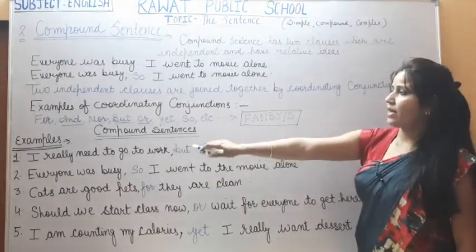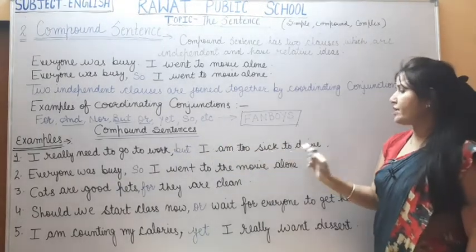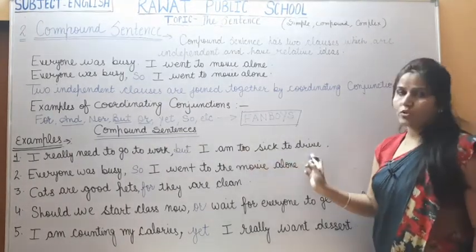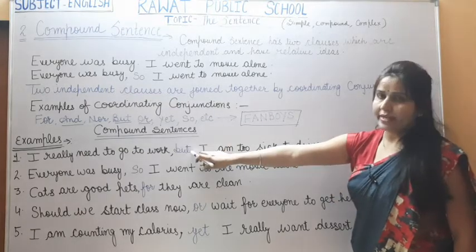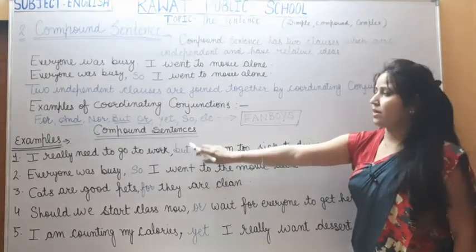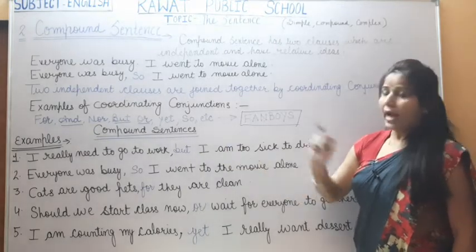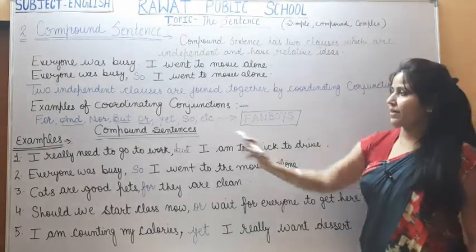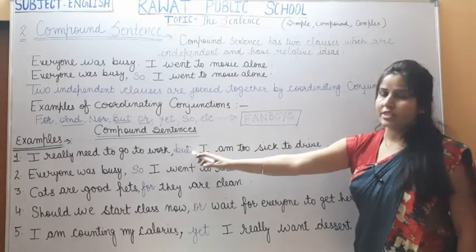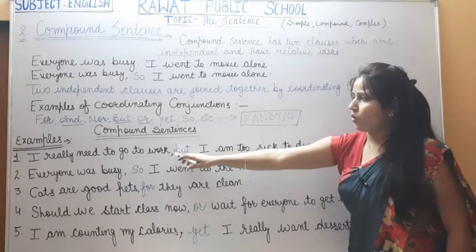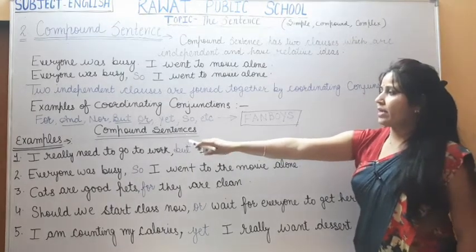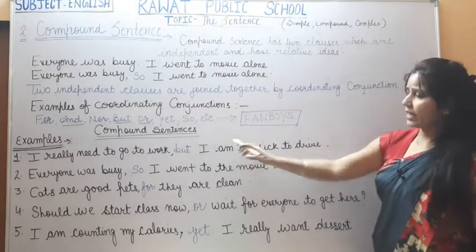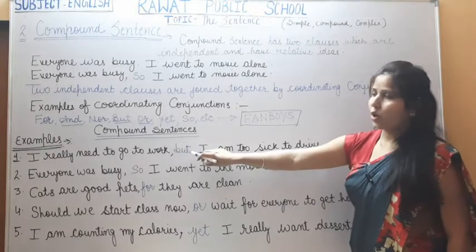Now we will understand compound sentences with examples. First: 'I really need to go to work, but I am too sick to drive.' The first part is an independent clause and the second is also an independent clause. 'But' is the coordinating conjunction joining them. According to the rule, a comma is placed before the coordinating conjunction.